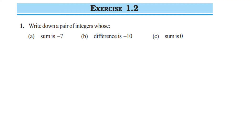Hey everyone, here I am doing Exercise 1.2, the Integer chapter of Class 7. This is the first question: write down a pair of integers whose sum is minus 7, difference is minus 10, and sum is 0. You can have different examples, so your answer may not match mine or your friend's answer — that's totally fine, but the answer should be correct.